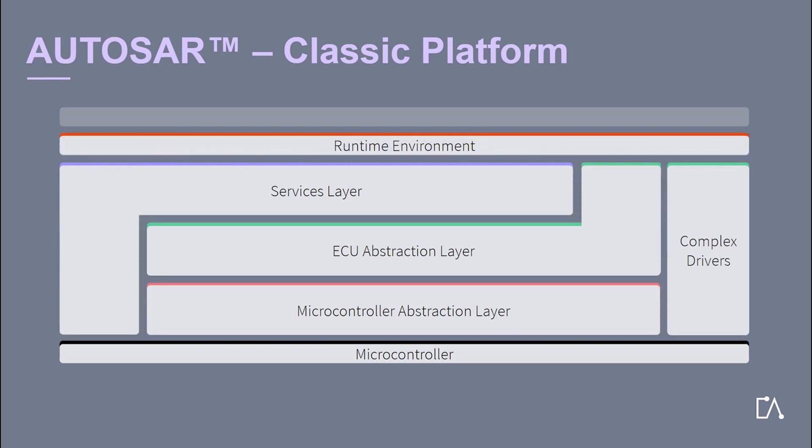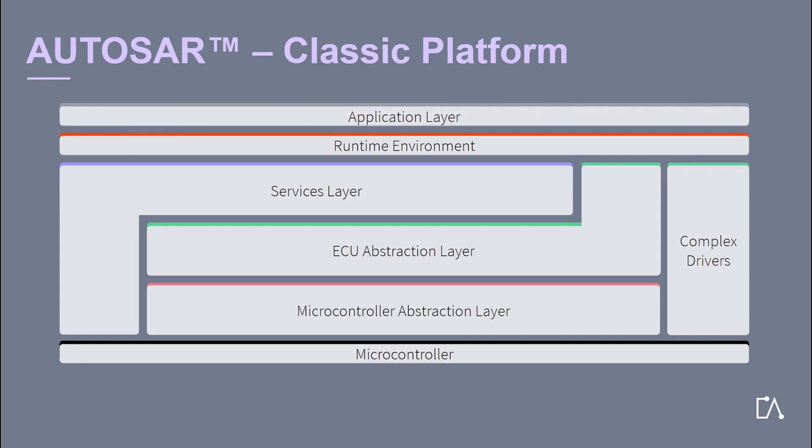Above the Basic Software lies the Runtime Environment. This layer provides communication services to the application software. The Autosar software components communicate with other components and services via the Runtime Environment. The main task of this layer is to make Autosar software components independent of the mapping to a specific ECU. The Application Software Layer realizes the application functionality; it is mostly hardware independent and consists of different software components.